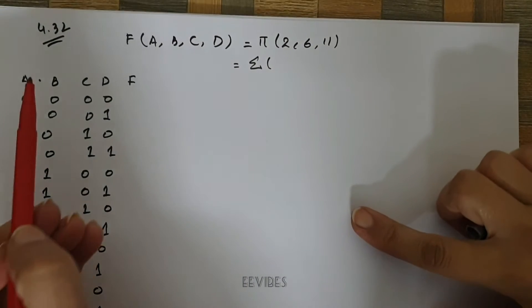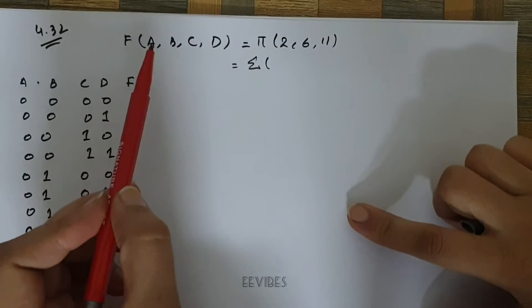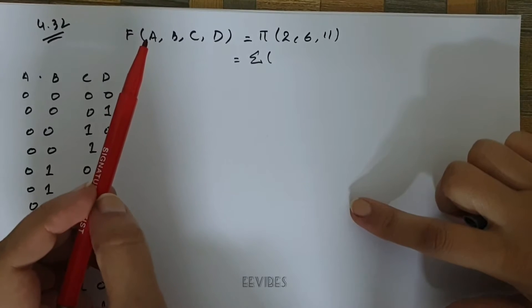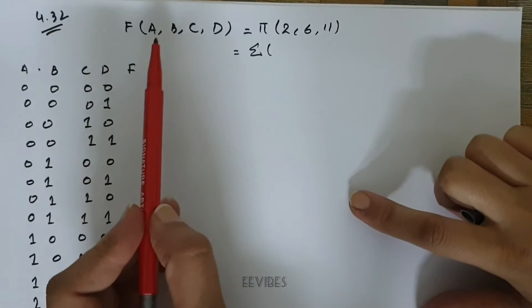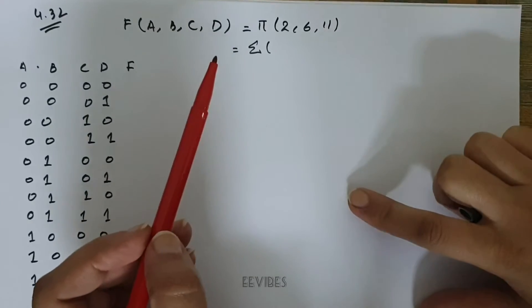Hi everyone, so in part a of problem 4.32 I actually implemented that function using an 8-to-1 line multiplexer. Now we are given the representation of a function in a slightly different form.